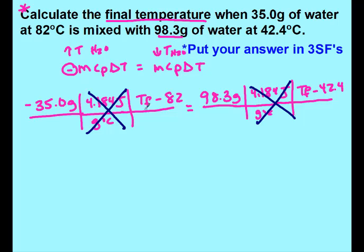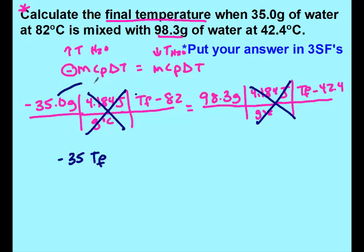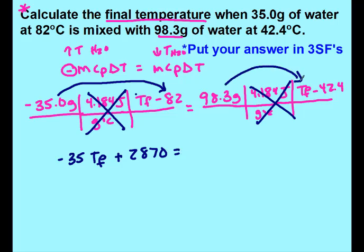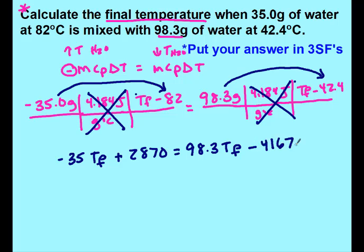Now I'm going to have to distribute. Anytime you're looking for a final temperature, you distribute on both sides. So I get negative 35·TF, and then negative 35 times negative 82 gives me positive 2870. On the right, 98.3 times TF gives 98.3·TF, and 98.3 times negative 42.4 gives negative 4167.92.